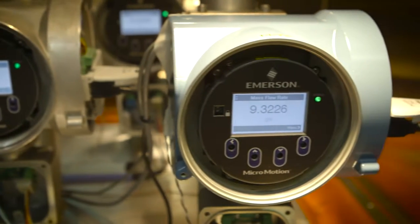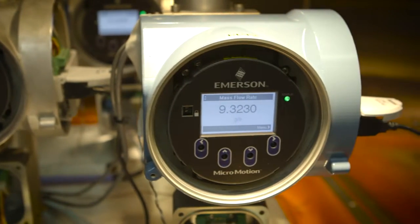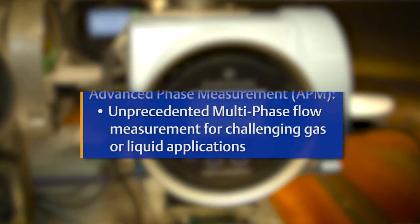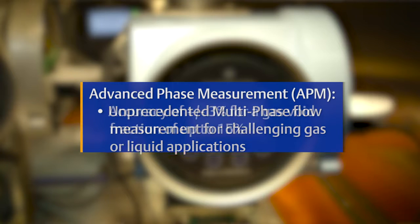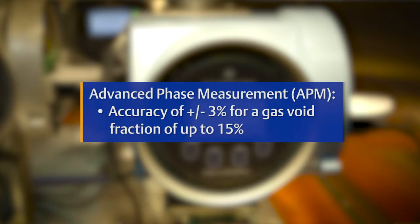I'm going to tell you a little about our advanced phase measurement software available on the 5700 transmitter. Advanced phase measurement, also referred to as APM, is a software algorithm that provides unprecedented multi-phase flow measurement for challenging gas or liquid applications, and is capable of providing an accuracy of plus or minus three percent for a gas void fraction up to 15 percent.